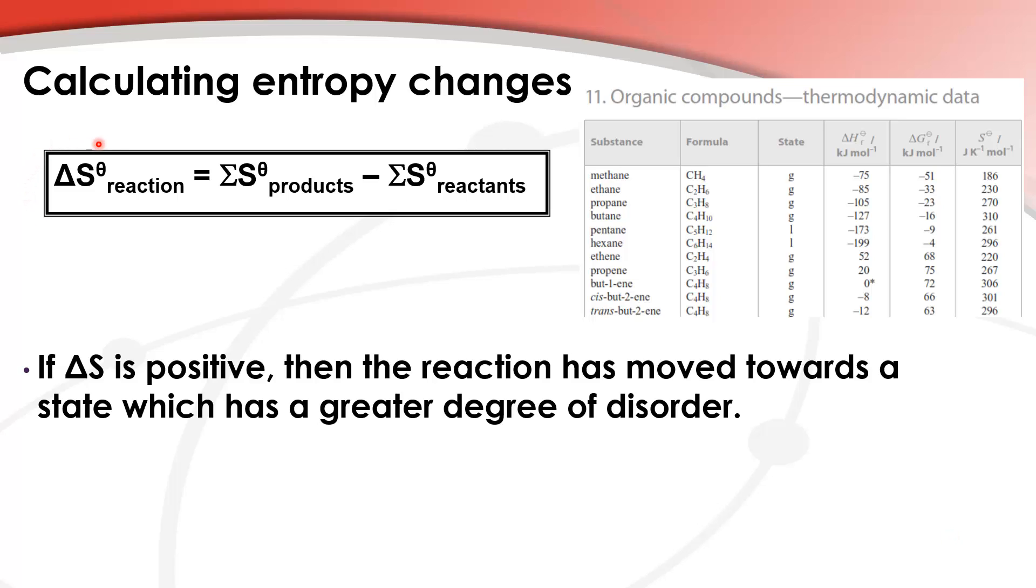When we calculate the change in entropy for a reaction, if the change in entropy is positive, so that's positive delta S, then the reaction has moved towards a state which has a greater degree of disorder. That's an increase in entropy.